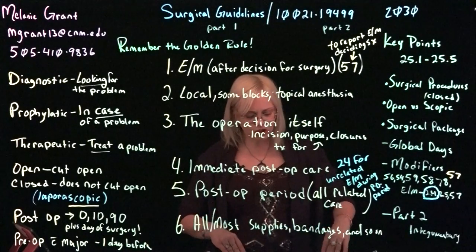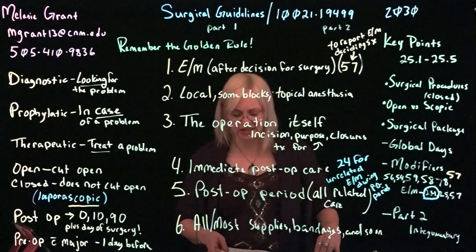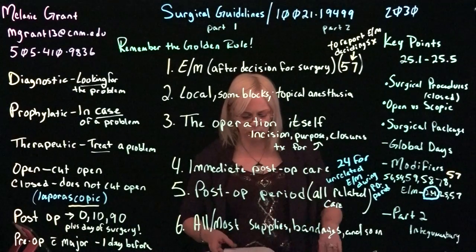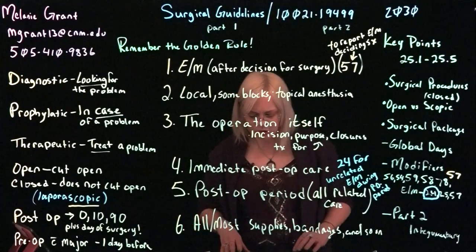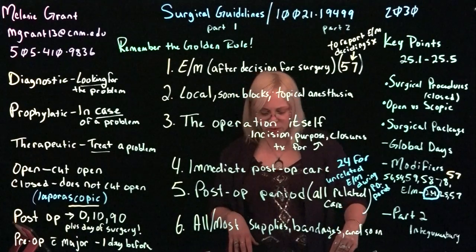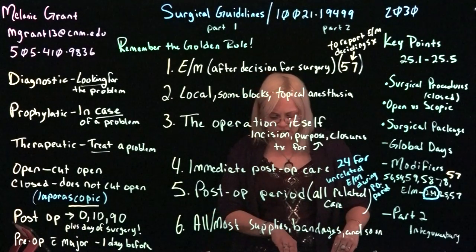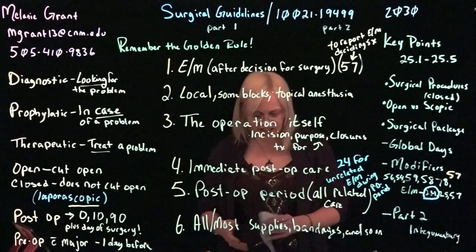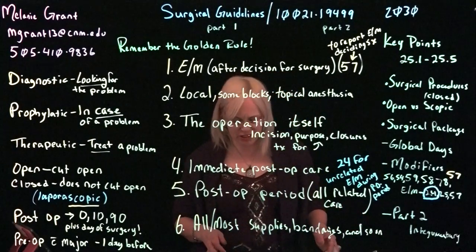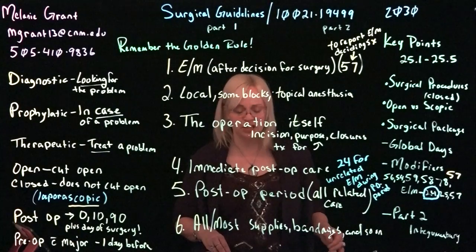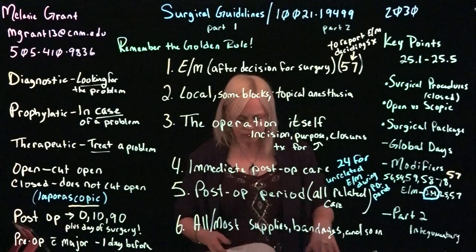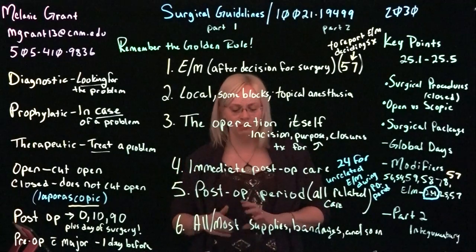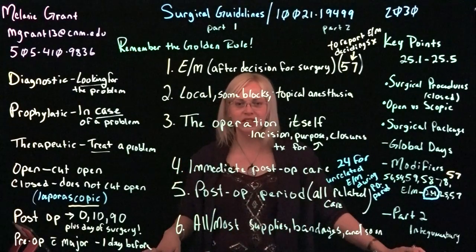Make sure you read through the modifier examples in this part of your chapter. For surgical coding, read through sections 25.1 through 25.4. The last section discusses unusual services and treatments with additional modifiers that will apply. After this, go ahead and watch the second lecture video for integumentary procedures.